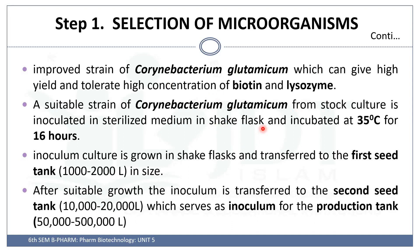The inoculum in sterile media is taken in a shake flask and incubated at 35 degrees Celsius for 16 hours. After 16 hours, from this shake flask, the inoculum is transferred into the first seed tank, which has a volume of 1000 to 2000 liters. After suitable growth, the inoculum is transferred to a second tank of 10,000 to 20,000 liters. This serves as the inoculum for the production tank.